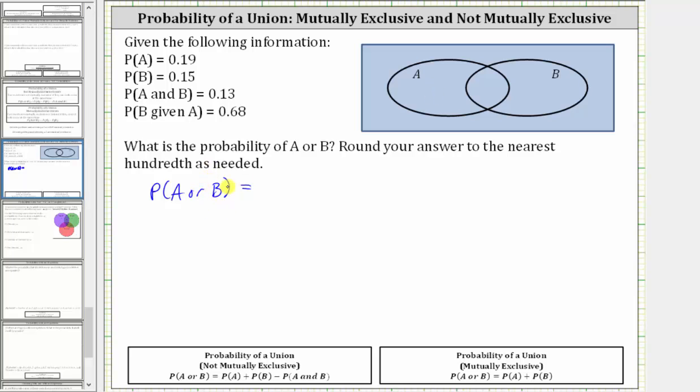Let's first find the probability using the Venn diagram, and then we'll find the probability using one of the formulas shown below.